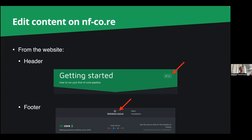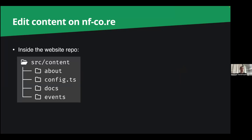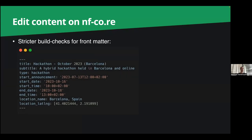It didn't change that much — we tried to basically rebuild a lot of things we had because we liked, for example, that when you want to edit something in the markdown you can just hit the edit button and are directed to the repository on GitHub. Or if you scroll down, the whole page also links to the markdown file, which is the basis for a lot of pages on the website. Inside the website repository, most of it lives inside the source/content folder, with about, docs, and events as the main files rendered on the website. The pipelines are also rendered there but they live in the pipeline repositories.